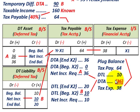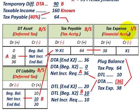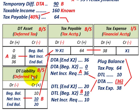Netting out our tax payable with our deferred tax liability and deferred tax asset, we come up with a tax expense of $38,000. We debit — or increase — our tax expense for $38,000, based on the plug between our tax payable and the net increase in deferred tax asset and deferred tax liability for the year.